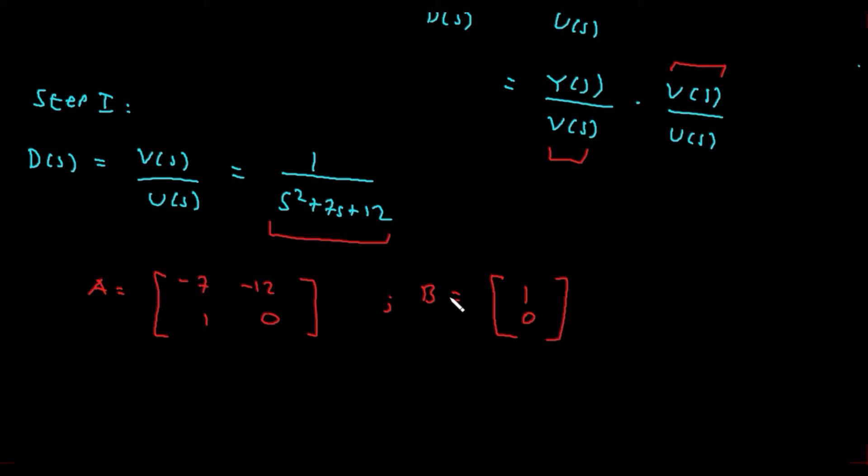This is the A and B part. Now our task is to find C and D, because the general form of state space is: x_dot = Ax + Bu and y = Cx + Du. We already have A and B. Now for the numerator part, that's used to find C and D. Let's write step 2, the numerator part.